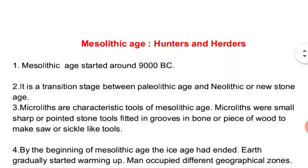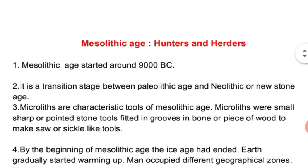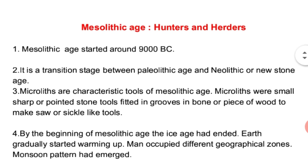This chapter is the Mesolithic Age, a phase of hunters and herders. Men obtained food by hunting and also started domesticating animals. This prehistoric phase started around 9000 BC. We have covered the Paleolithic Age in the previous video, and now we move to the next prehistoric phase: the Mesolithic Age.